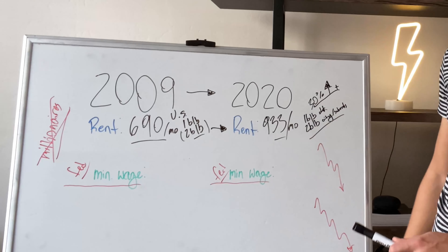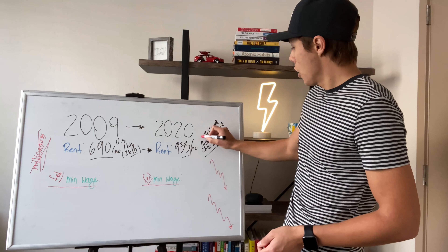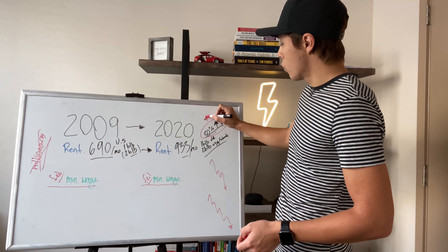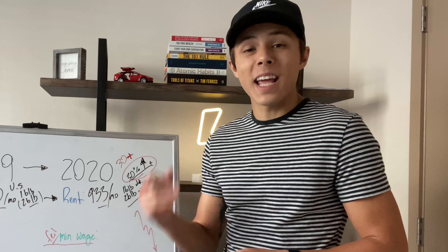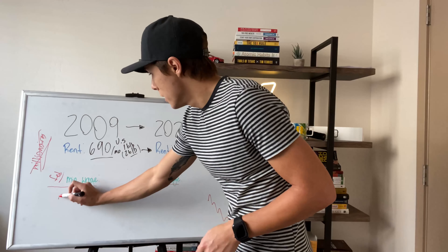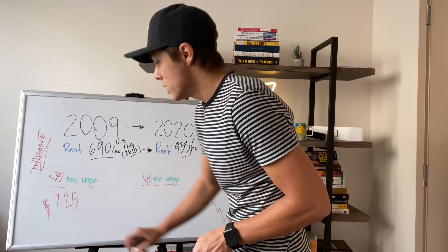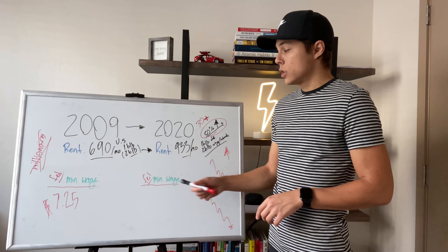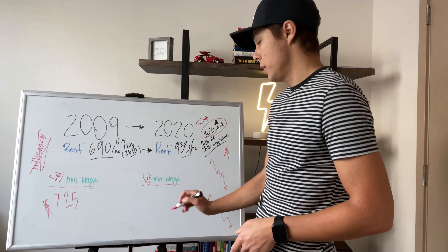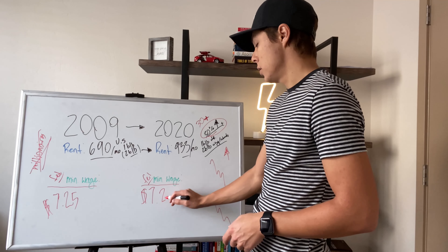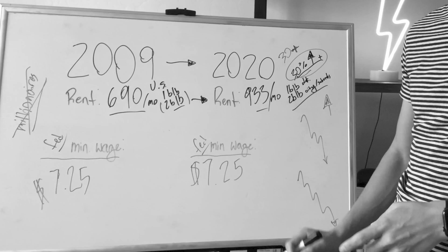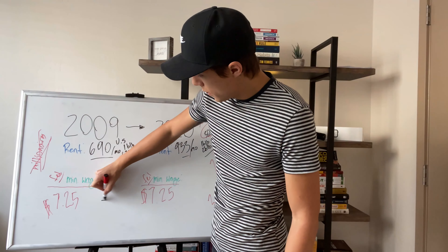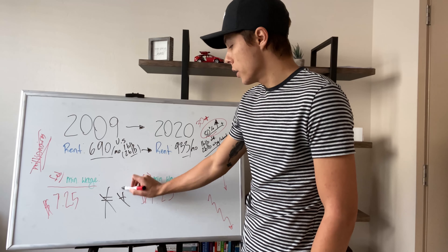So let's talk about the difference between 2009 and 2020 minimum wage. We had a 30% increase in rent, so we should have an equal or greater increase in minimum wage for the standard of living to go up. The federal minimum wage in 2009 was $7.25. And the federal minimum wage today in 2020 is also $7.25. There has been no increase. That is a serious problem.